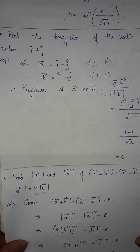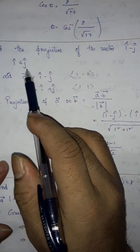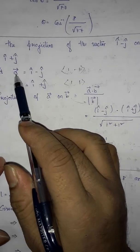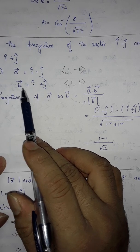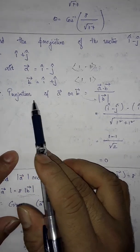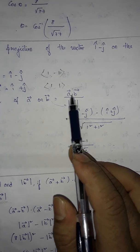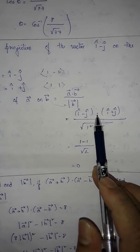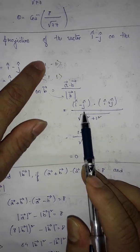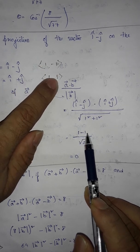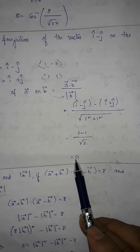Question number 3: Find the projection of the vector i − j on the vector i + j. Denote the first vector as a and the second as b. Scalar components of a are 1 and −1; scalar components of b are 1, 1. The projection formula is: projection of a on b = a·b divided by magnitude of b. The dot product is 1×1 + (−1)×1 = 1 − 1 = 0. Magnitude of b is √(1² + 1²) = √2. So the projection is 0/√2 = 0.